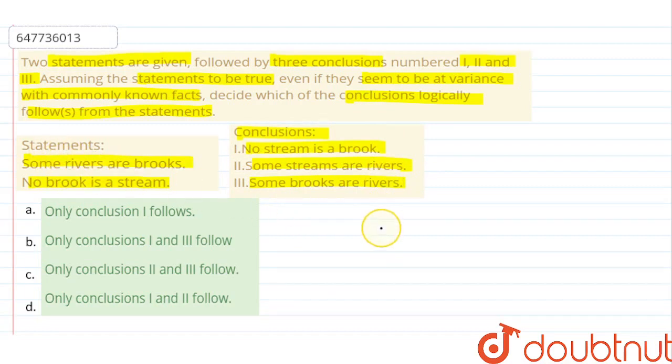So guys, let's see statement 1. What did they say in statement 1? Some rivers are brooks. So you have some relation. If I draw a diagram of rivers, it's reverse. This is any shape we can use in the diagram.